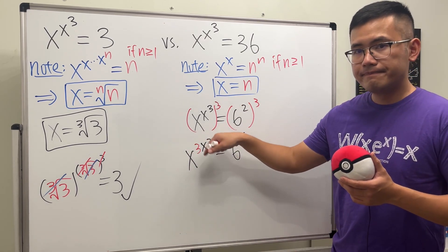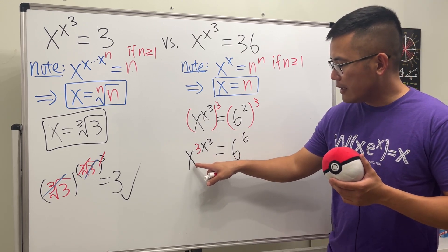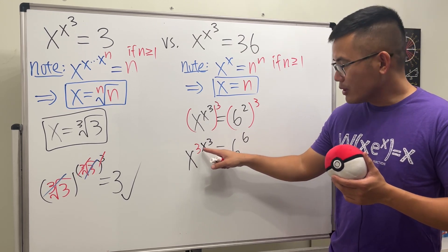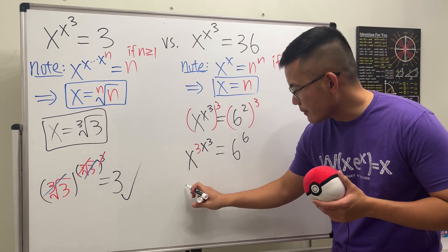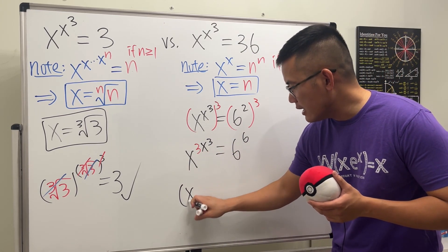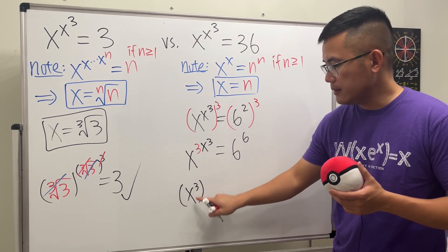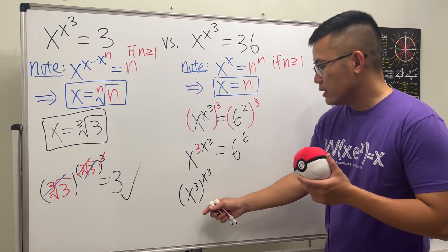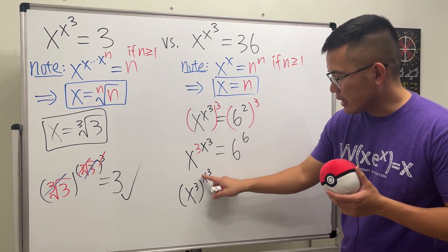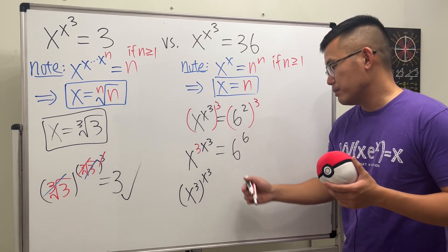So on the right hand side we have the n to the n, so that's pretty good. But on the left hand side, what can we do? Notice we have x to the third power, and then multiply with the x to the third power here. So in fact, we can rewrite this as the following: we can write it as x to the third power first, and then raise to the x to the third power.